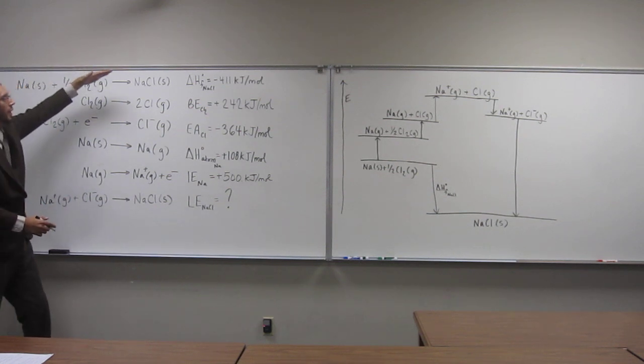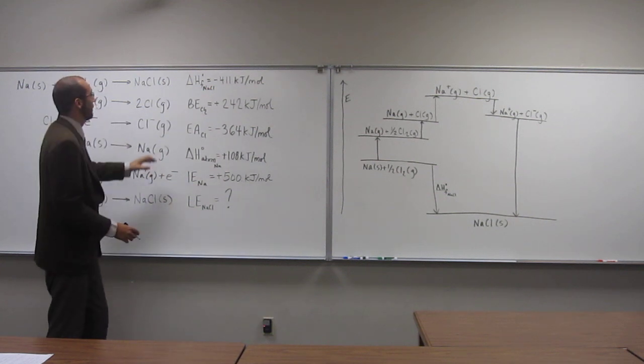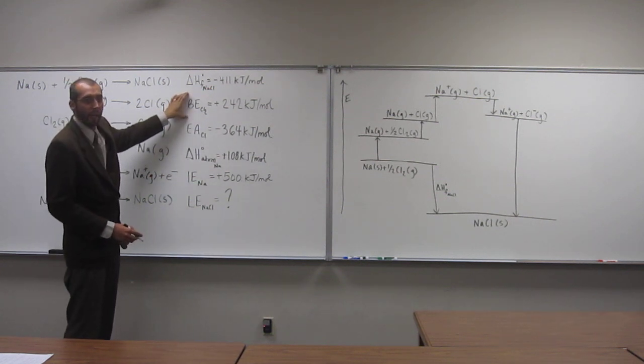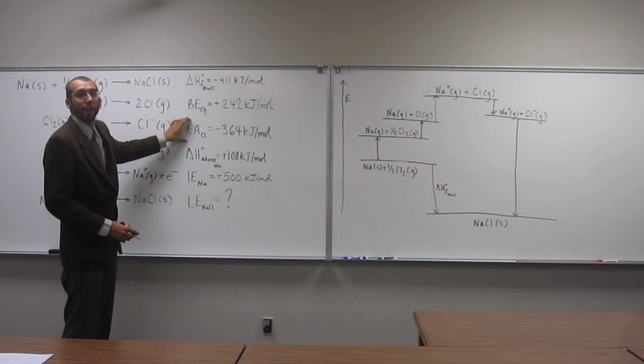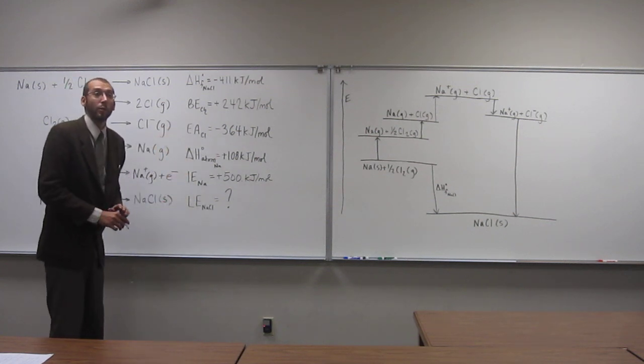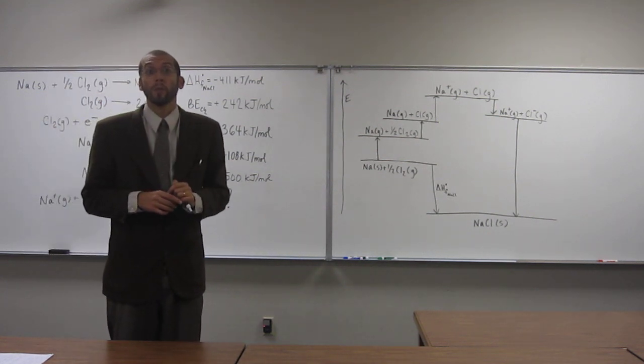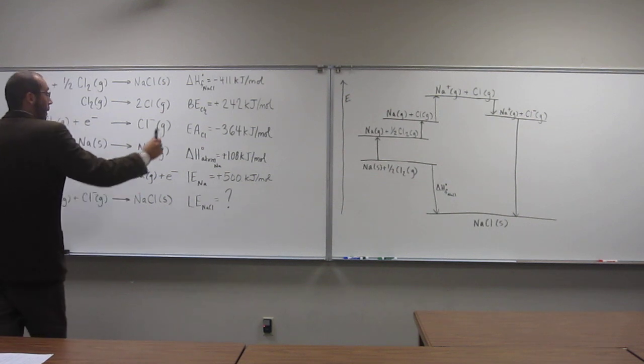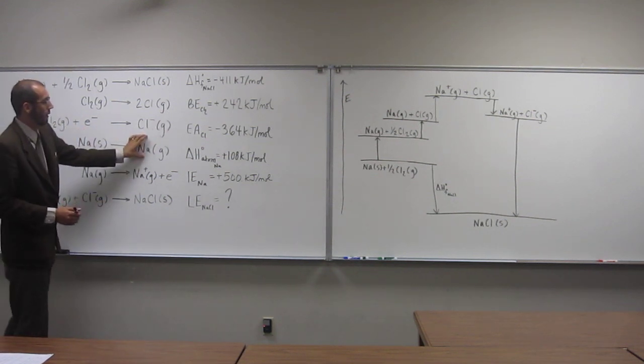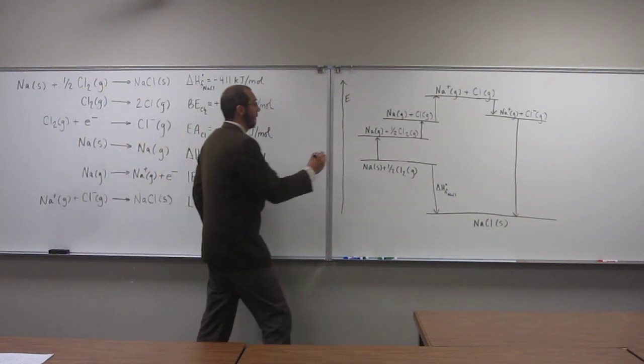Again, remember, all of these numbers are given to you on these various tables. So like the bond energy table, the electron affinity table, the atomization table, the ionization energy table. So you're going to have to be given all of these tables in order to do this problem. So what did we say? Sodium solid went to sodium gas. So that's the delta H of the atomization of sodium. So let's label that.